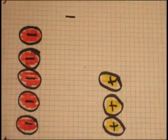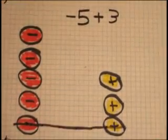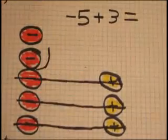Another equation is negative five plus three. When we cancel out, we find that the answer is negative two.